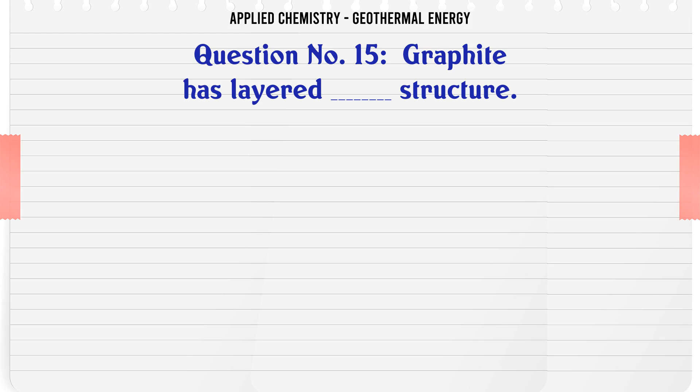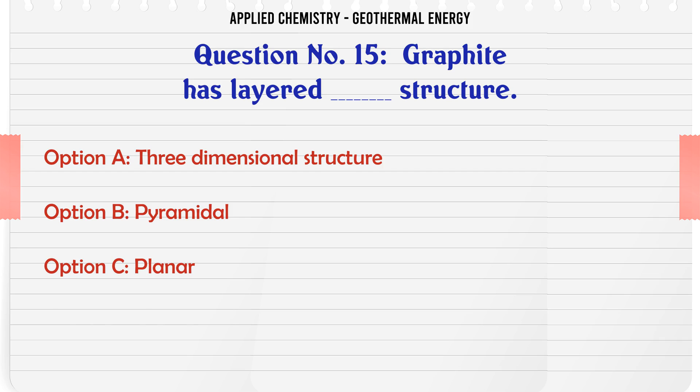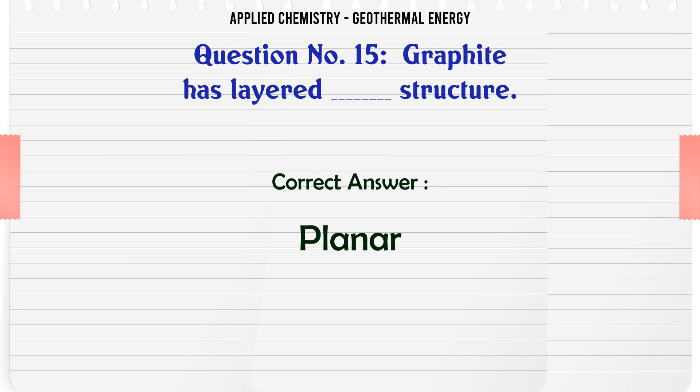Graphite has a layered structure. What type? A: Three-dimensional structure, B: Pyramidal, C: Planar, D: Pyramidal. The correct answer is planar.